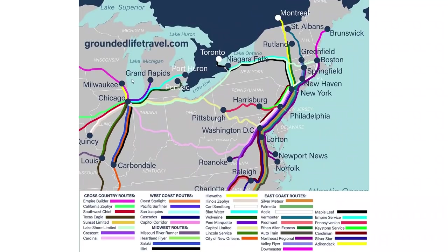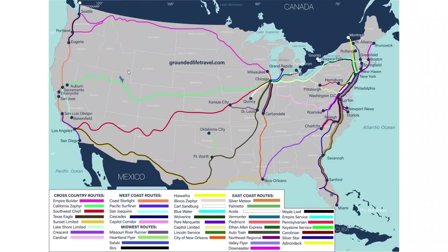Chicago is the biggest hub and has the most trains coming in and out. If you're connecting from the east coast to the west coast, you'll be going through Chicago and probably changing trains there — because no trains arrive in Chicago and continue further. The other main hubs are New York City and Washington DC, and out west, Los Angeles is a minor hub with several trains up and down the west coast.